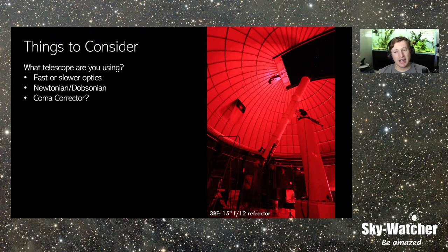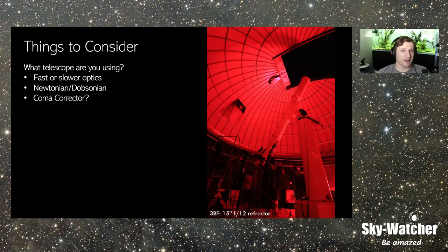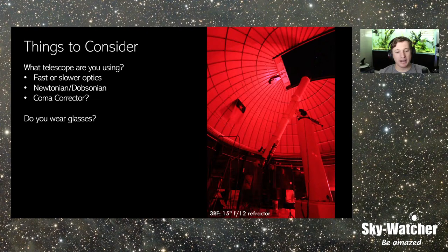If you're using a coma corrector, a lot of these considerations really come into play for Dobsonian owners, because many of those telescopes are f/5 or faster by default. In this modern era of Dobsonians, f/4 is kind of the starting point. A coma corrector will help, but if you've got one of our 10-inch or 12-inch Dobs — those are f/4.7 and f/4.9 — that's still fairly fast and can be more demanding on the eyepiece.